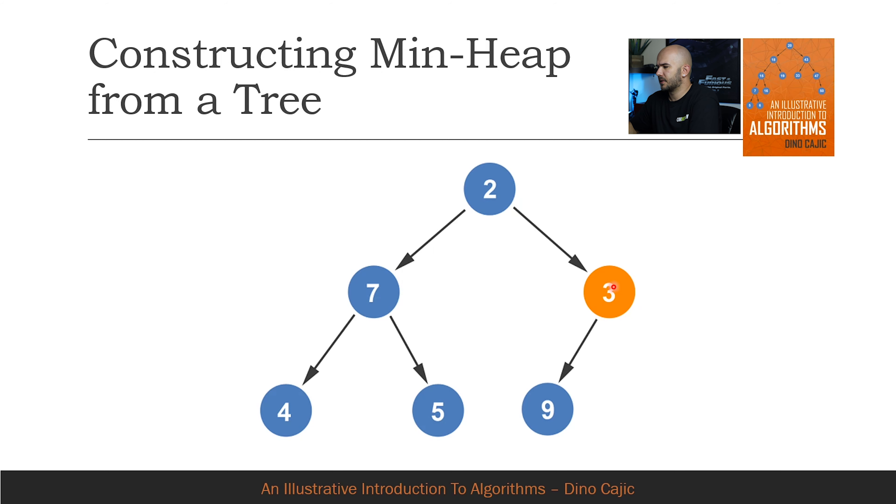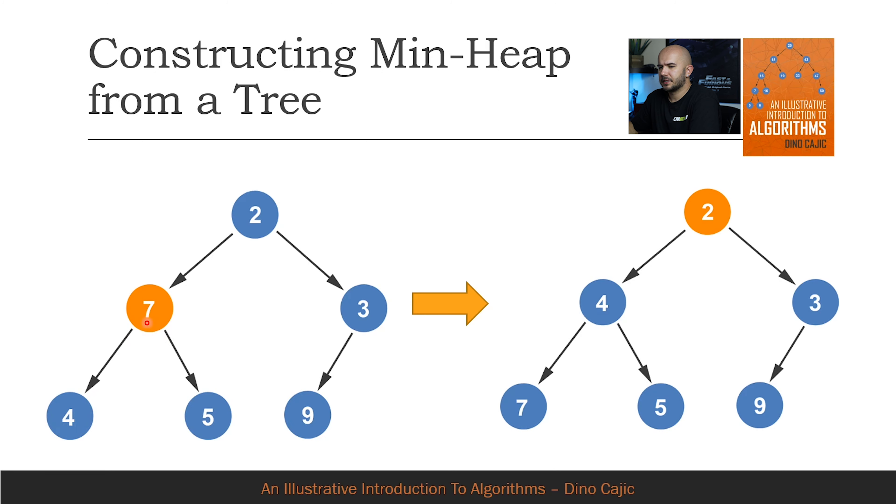We begin at the third node. Since 3 is already smaller than 9, we can move to the second node. A comparison is made between the two children. Since 4 is smaller, 7 is compared to 4. Since 4 is smaller than 7, the two nodes are swapped.